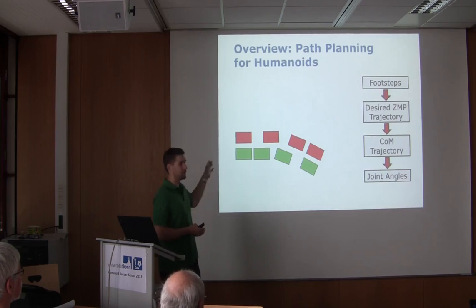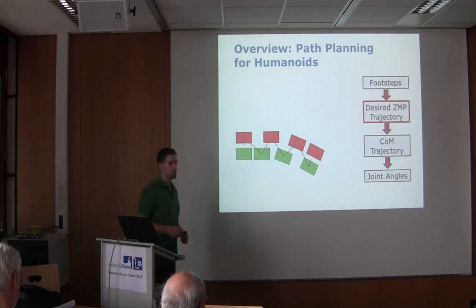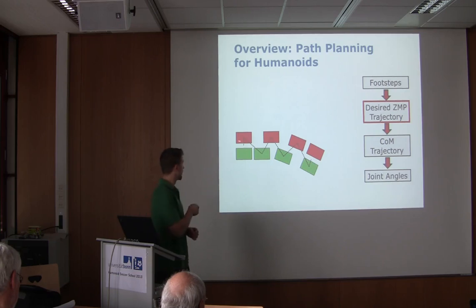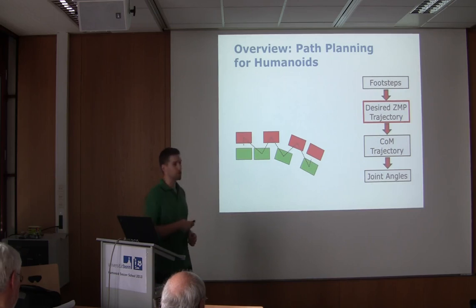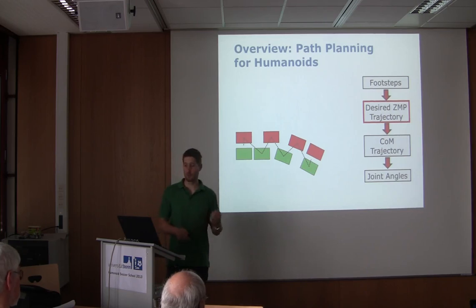Let's assume we have a sequence of footsteps, starting from the left and going to the right. What we can do with this is generate a ZMP trajectory. Zero moment point — it means that our ZMP needs to remain within the support polygon. When the robot is walking, it moves the ZMP from one foot location to the next, and during the double support phase it transitions to the next foot.